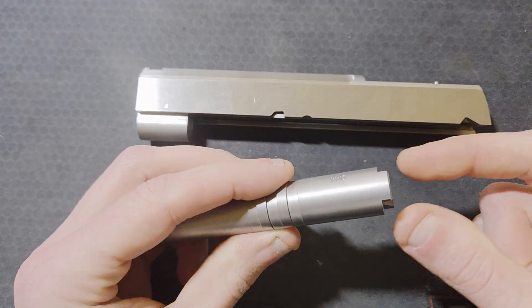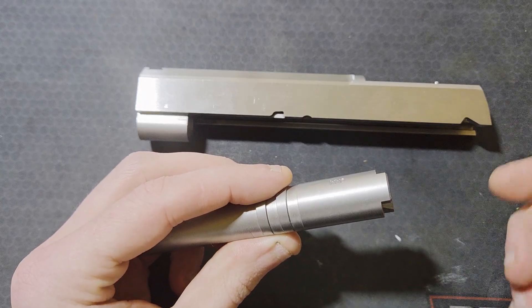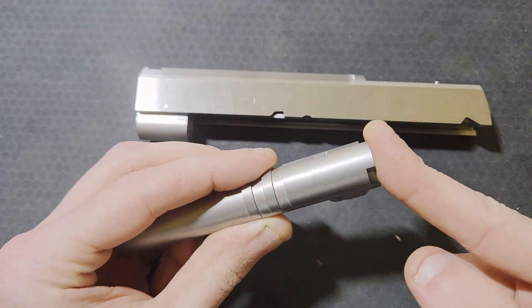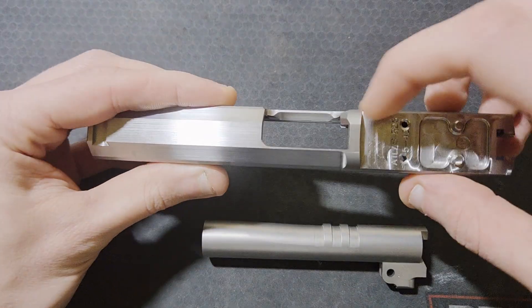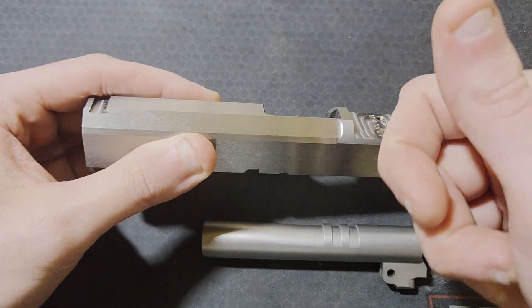A gunsmith fit barrel will have a hood that is too wide and too long. Generally, material needs to be removed from both sides of the hood and the end for it to slide back up against the breach face in this slot and then lock up into place in the slide.